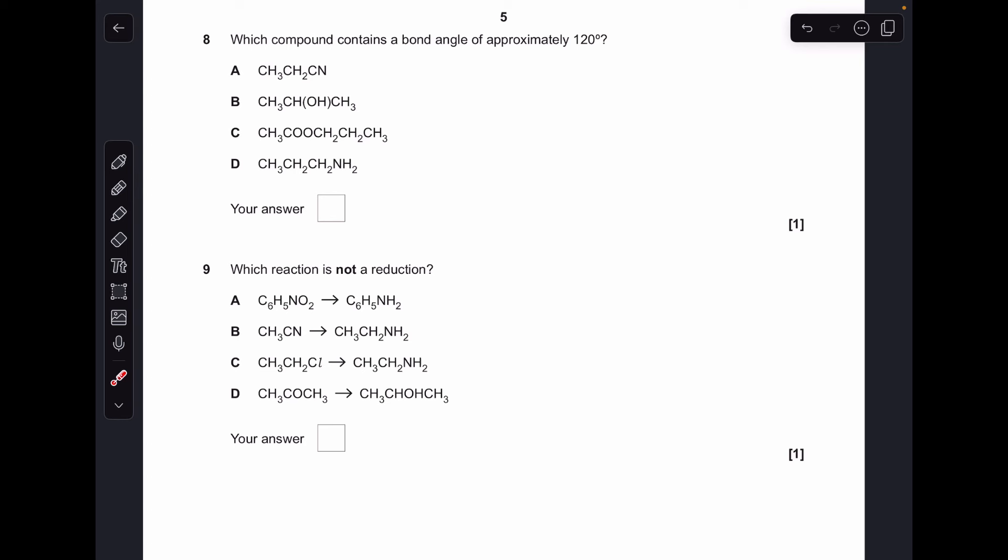Moving on to number eight. This is testing our shapes and angles knowledge. Which of these has got a bond angle of approximately 120 degrees? It's this one here. Because around this second carbon, we've got three bonding regions, electron repulsion, trigonal planar, 120 degree angle. So C there.